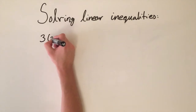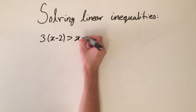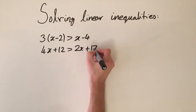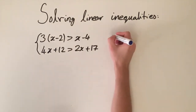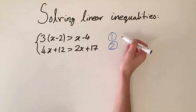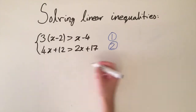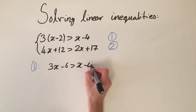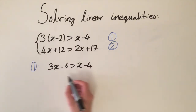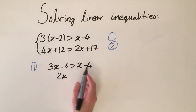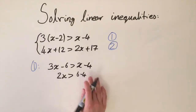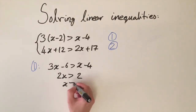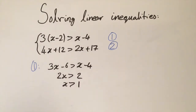Let's do another example: 3 times (x minus 2) is greater than x minus 4, and 4x plus 12 is greater than 2x plus 17. We label these inequality 1 and inequality 2 and solve each individually. For inequality 1, expanding the brackets gives 3x minus 6 is greater than x minus 4. Subtracting x and adding 6 to both sides gives 2x is greater than 2, so x is greater than 1.